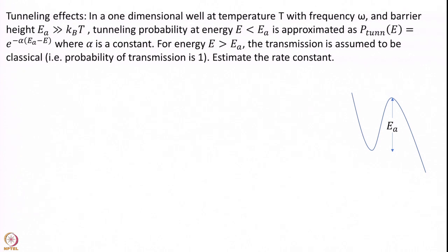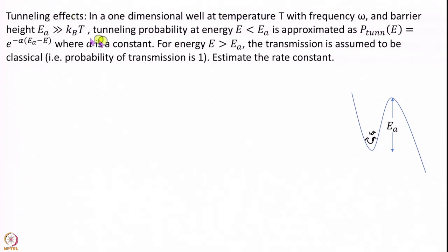The second problem is slightly harder but interesting — it shows you how to include quantum mechanical effects in transition state theory. Let us imagine I have only a one-dimensional well at some temperature T. The frequency is given as omega, and the barrier height Ea is much greater than kT. We are going to include tunneling. The probability of tunneling at an energy E less than Ea is given by a formula with constant alpha, and for energy Ea the transmission is 1. Can you estimate the rate constant? Pause the video and attempt this problem.